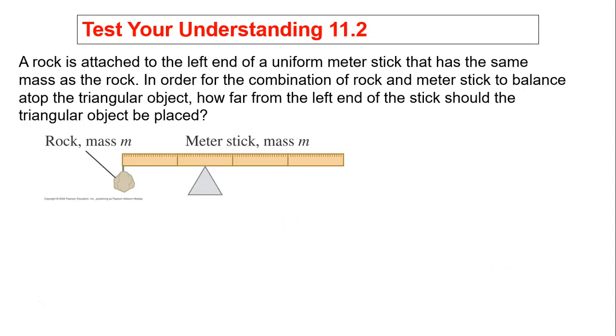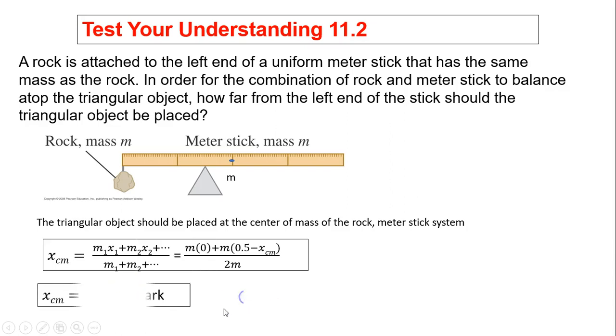Test your understanding. So a rock is attached to the left end of a uniform meter stick that has the same mass as the rock. So in order for the combination of the rock and the meter stick to balance on top of a triangular object, how far from the left end of the stick should the triangular object be placed? Well, so here is M. The other M is right over here. So the triangular object should be placed at the center of the mass of the rock and meter stick system. So over here is M. Over here is another M. Actually, triangular object should be placed right over here at the 0.25 mark. Right? You don't even have to do math because the mass of the rock and the mass of the meter stick are the same. So this triangular fulcrum has to be right under here in the middle of the two.